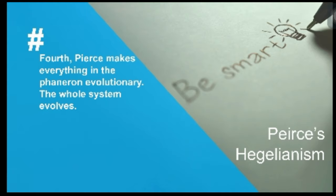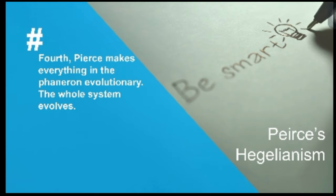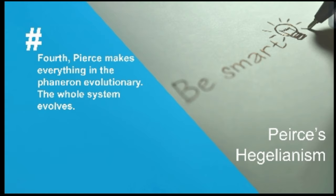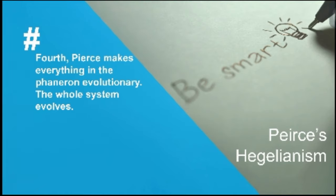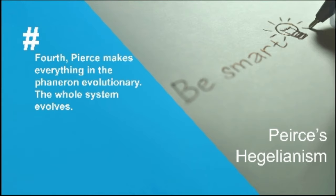Fourth, Peirce makes everything in the Phaneron evolutionary — the whole system evolves. It was in his period when evolutionism, already proposed by Hegel in philosophy as the evolution of ideas, and by Charles Darwin in biology as the evolution of biological species, was the atmosphere of intellectual development. For Peirce, the entire universe and everything in it is an evolutionary product — even what we call natural law evolved from one another and is continuously evolving.